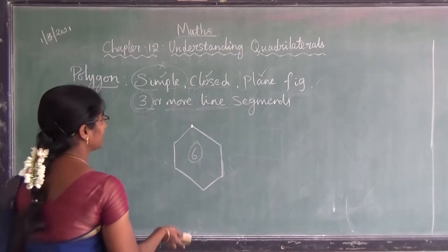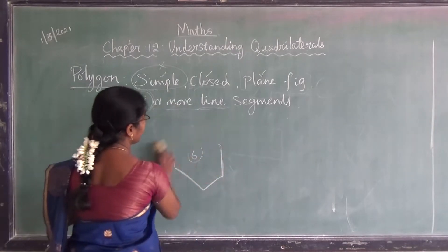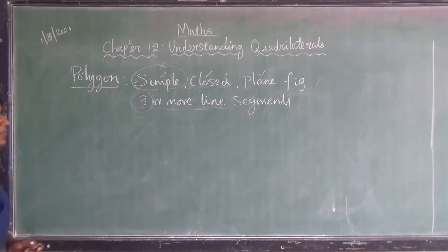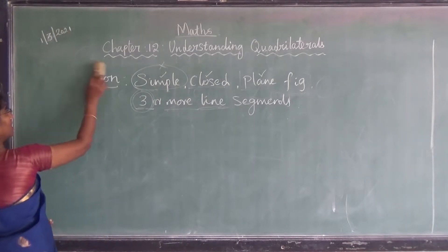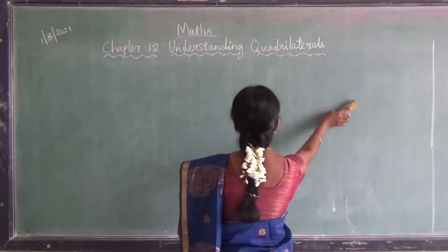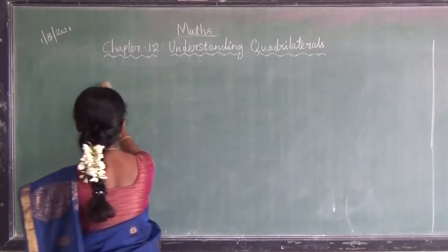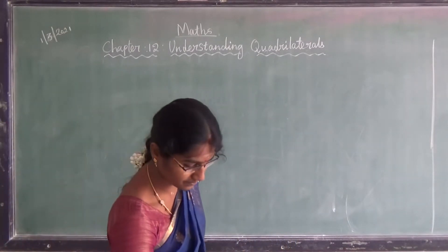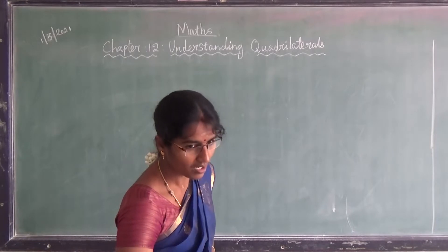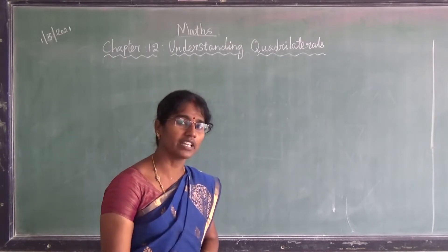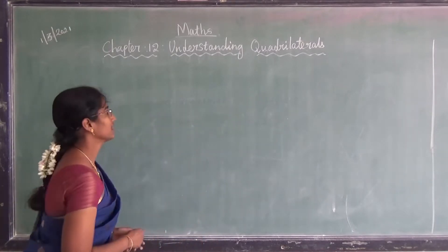So polygon means it is a simple, closed, plane figure with a minimum of three or more line segments. Circle is not a polygon. Square, parallelogram, trapezium, pentagon, hexagon — all these are polygons.